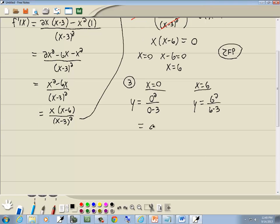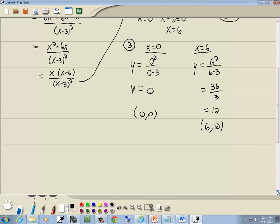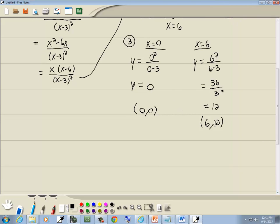0 divided by anything is 0. So this point would be 0, 0. Put my x and y together. This one, 6 squared is 36. 6 minus 3 is 3. 36 over 3 is 12, which gives us 6 and 12. So these would be our two answers.